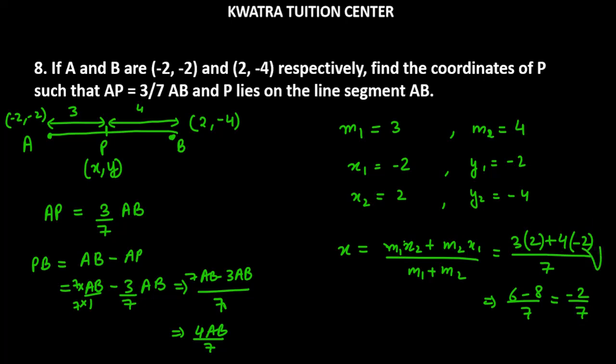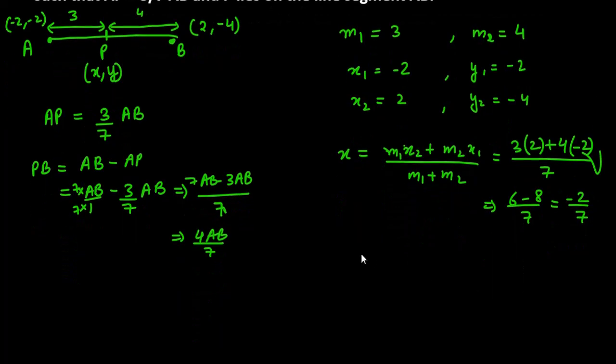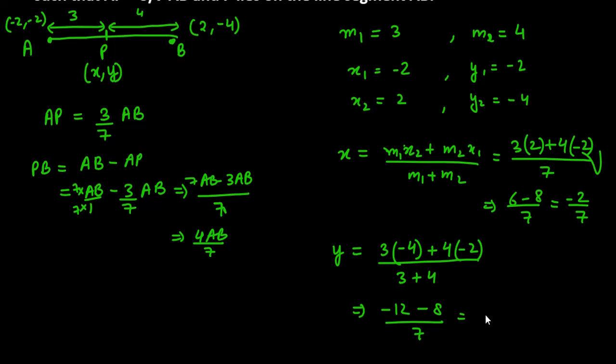Now similarly we can find the value of Y. We will find Y's value, all the information is given to us. Now we put M1, which is 3. With M1 comes Y2, Y2 is -4, plus M2 is 4. Now Y1 is -2 over M1 plus M2, which is 3 plus 4. So 3 into -4 is -12, then -8 over 7, which equals -20 over 7.